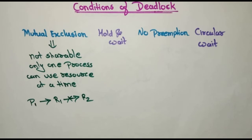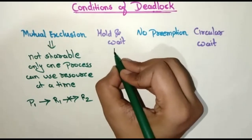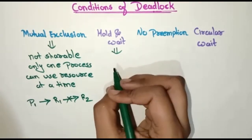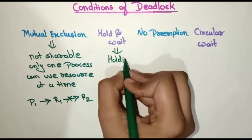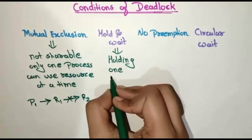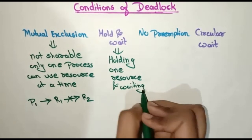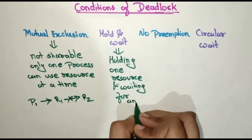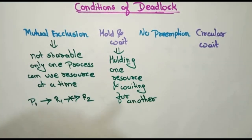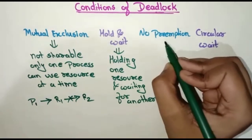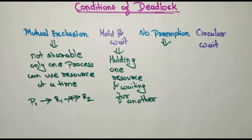The next condition is hold and wait. This means a process is holding one resource and waiting for another. This is the second condition of deadlock.